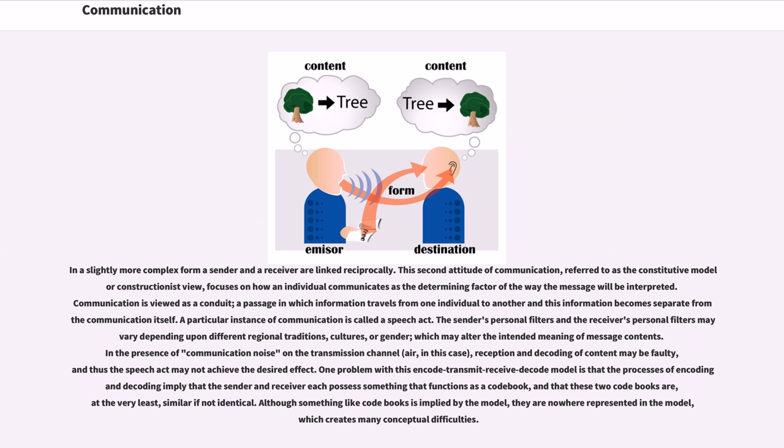One problem with this encode-transmit-receive-decode model is that the processes of encoding and decoding imply that the sender and receiver each possess something that functions as a codebook, and that these two codebooks are at the very least similar if not identical. Although something like codebooks is implied by the model, they are nowhere represented in the model, which creates many conceptual difficulties. Theories of coregulation describe communication as a creative and dynamic continuous process, rather than a discrete exchange of information.